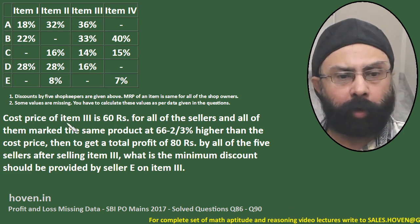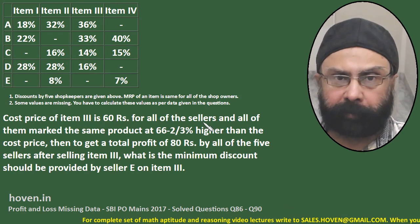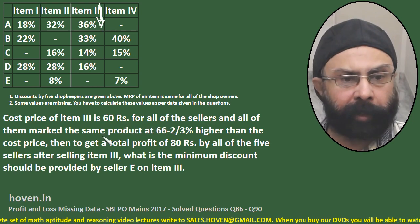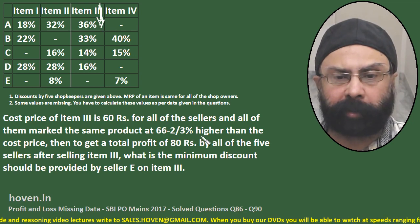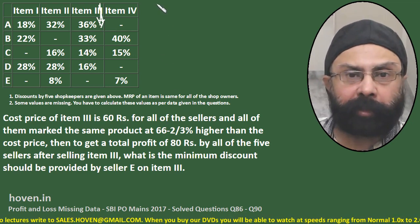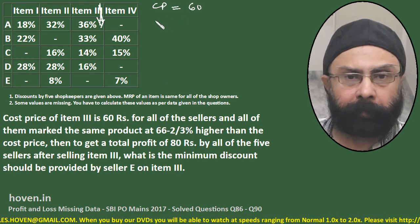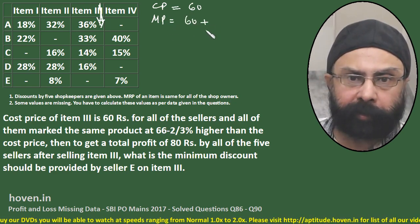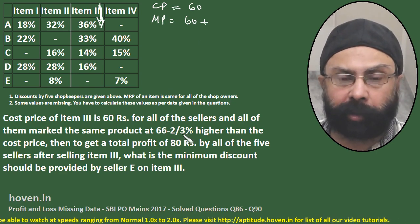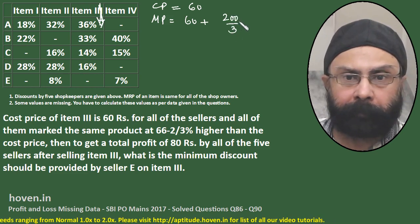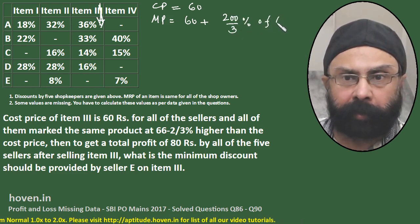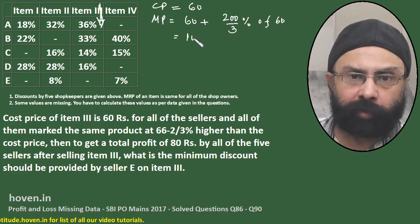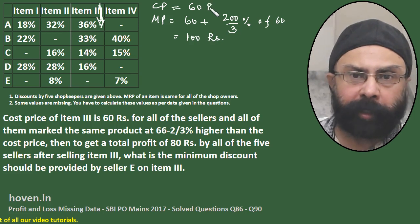This question says: cost price of item 3 is 60 rupees for all the sellers. Cost price is 60, and the marked price is higher by 200/3 percent of 60. So marked price equals 60 plus (200/3) percent of 60, which equals 60 plus 40, giving marked price as 100 rupees. So for all sellers, cost is 60 and marked price is 100.